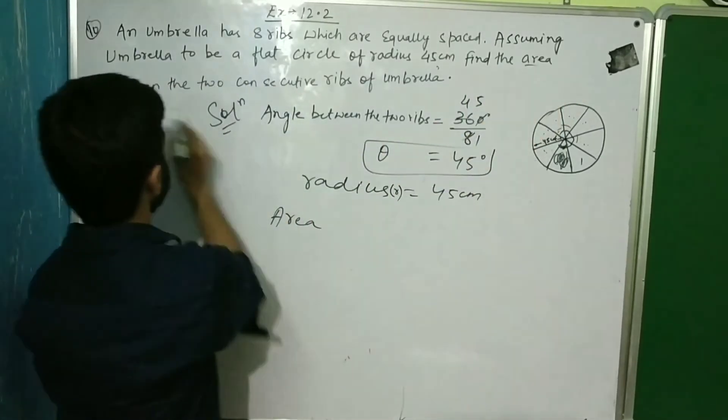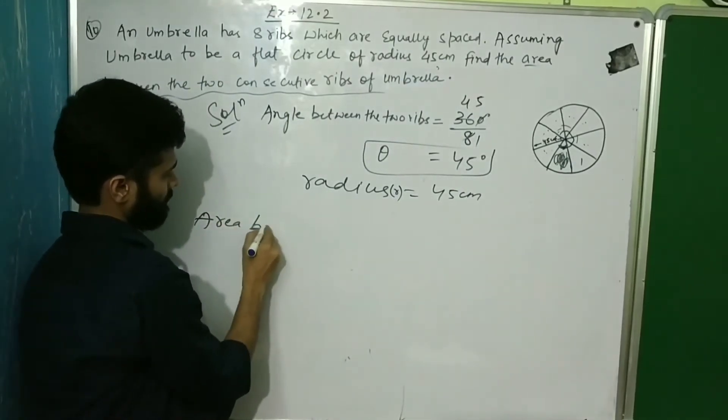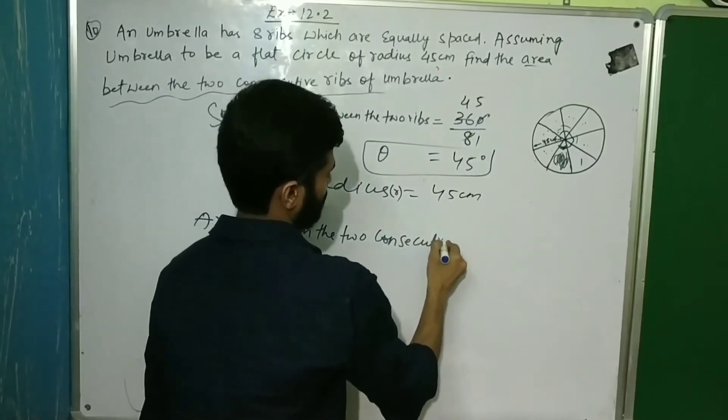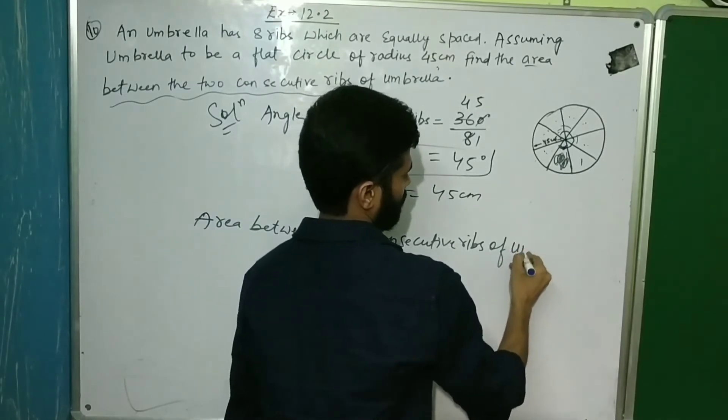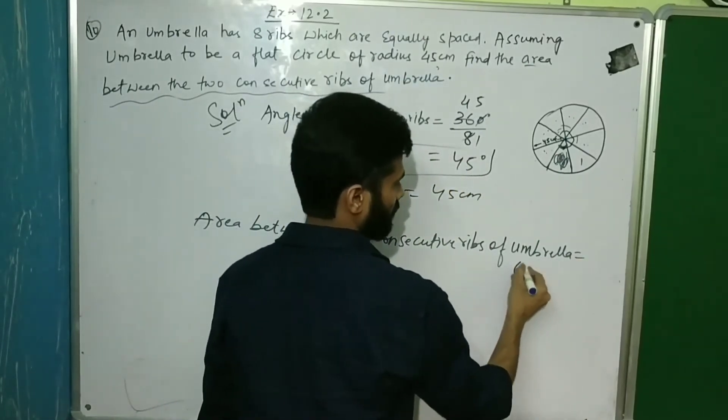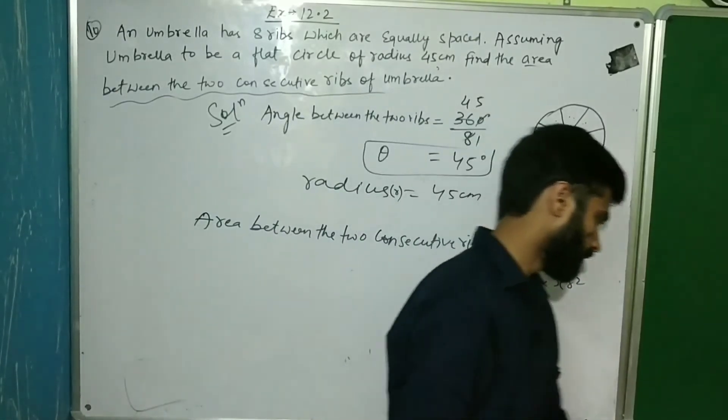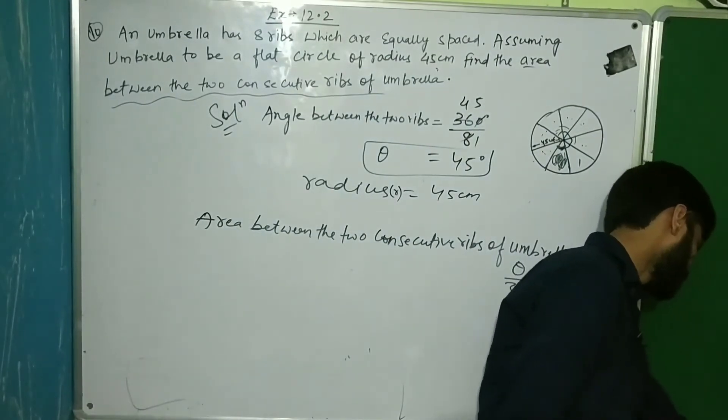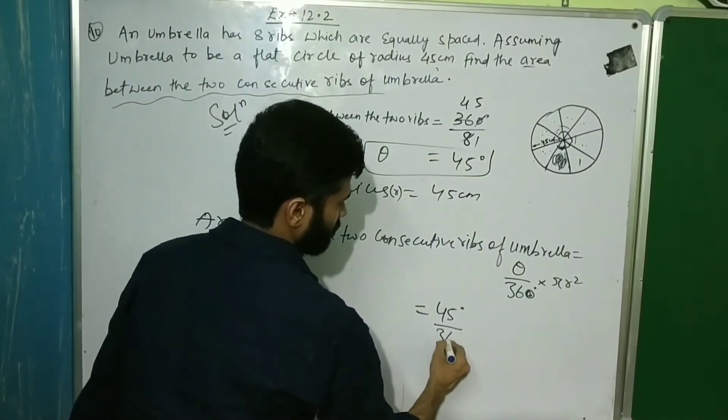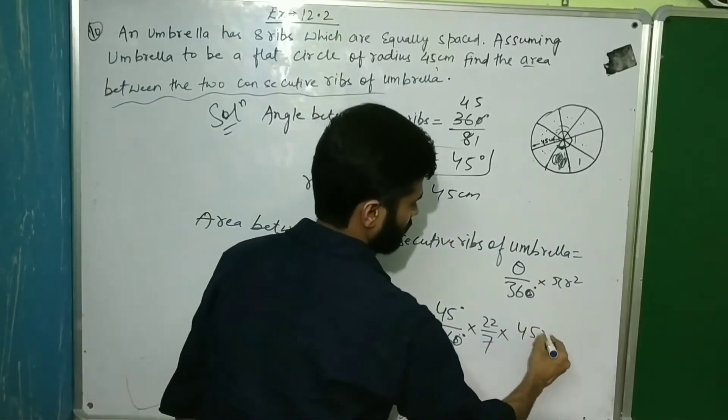Area, area between the two consecutive ribs of the umbrella, what will happen? The formula is theta upon 360 degrees into pi R squared. If pi is 3.14, so 3.14 into 45 times 45.